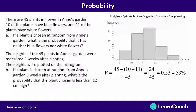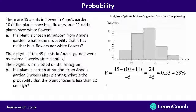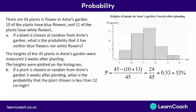Let's look at question B now. We're told the heights of the 45 plants in Anne's garden were measured three weeks after they were planted. The heights are plotted on this histogram. So if a plant is chosen at random from Anne's garden three weeks after they're planted, what is the probability that a plant chosen is less than 12 centimetres high? Here we have 17 plants between 11 and 12 centimetres, 14 plants between 10 and 11 centimetres, and 5 plants between 9 and 10 centimetres.